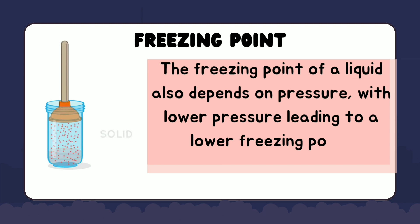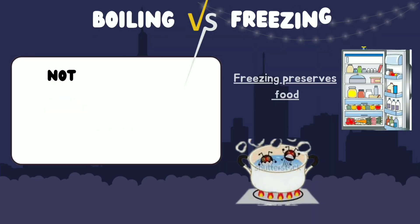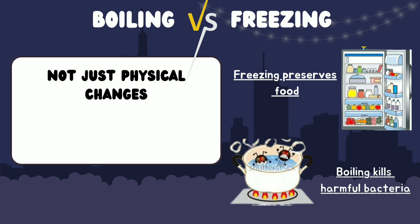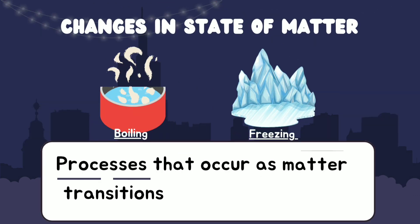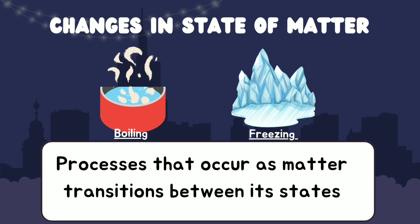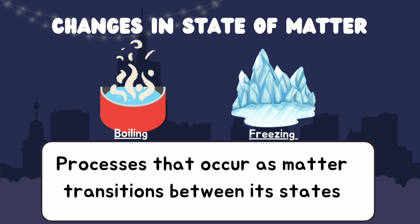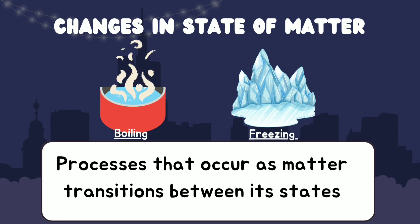It's important to note that boiling and freezing are not just physical changes, but they also have chemical implications. For example, boiling water kills harmful bacteria, making it safe for drinking, and freezing food preserves it for later consumption. In summary, boiling and freezing are two important processes that occur as matter transitions between its states. Whether it's the steam rising from boiling water or the formation of ice on a frozen lake, these changes are testament to the dynamic and constantly changing nature of matter.